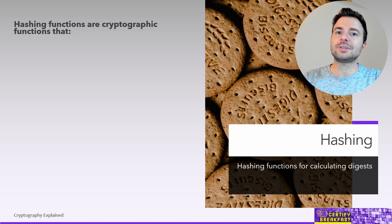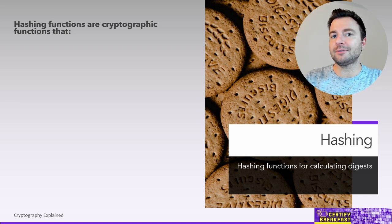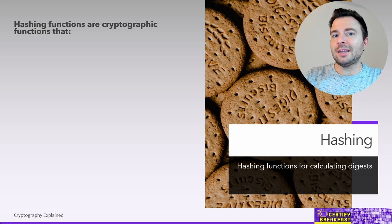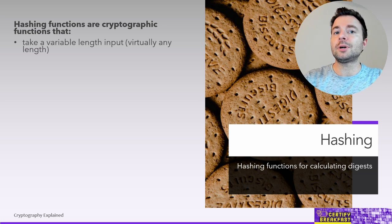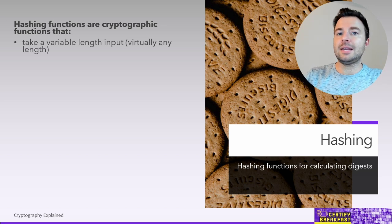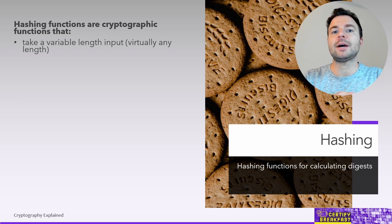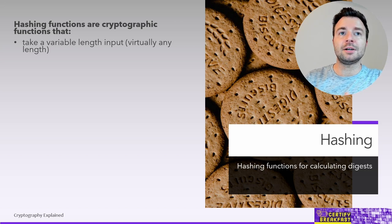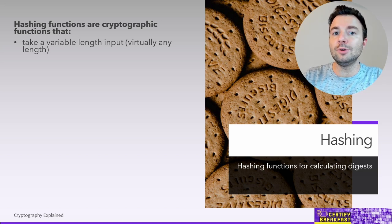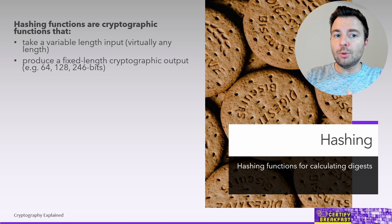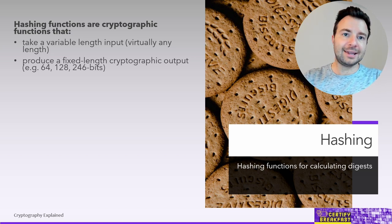Let's talk about hashing first, because hashing functions are the simplest implementations of algorithms in the cryptography world. A hashing algorithm takes a variable-length input — it can be a simple password, a word, an entire document, or even an entire 10 GB movie file — and always produces a fixed-length cryptographic output called a hash.